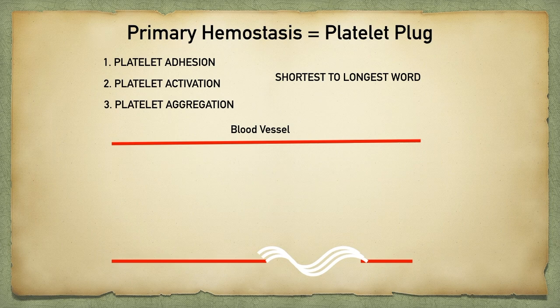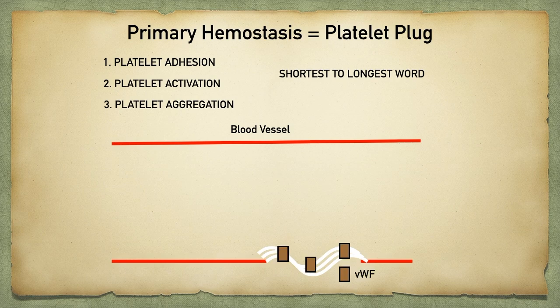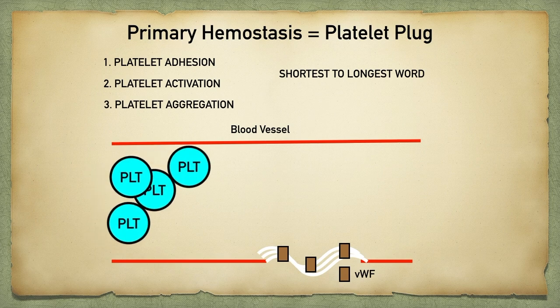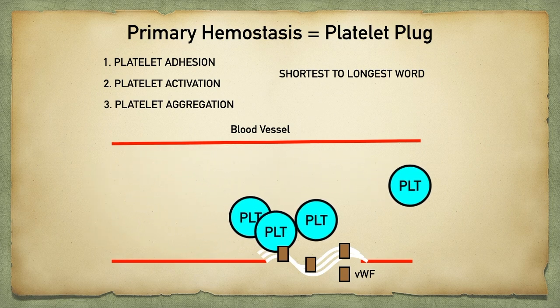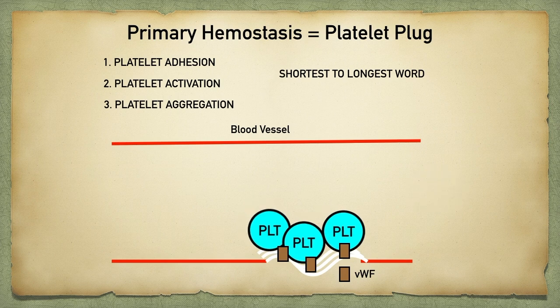Starting with platelet adhesion: damaged endothelial cells will release a glycoprotein called von Willebrand factor. After there is injury to a blood vessel, the von Willebrand factor will bind to the exposed collagen. This is important because platelets express receptors on them that will bind to von Willebrand factor as they pass the injured site. This platelet receptor is called glycoprotein 1b, and this process is called platelet adhesion.